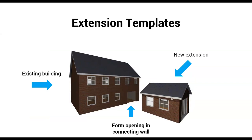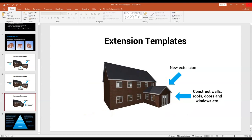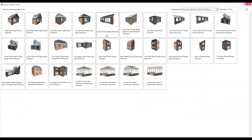So what an extension template allows you to estimate: the software will allow you to form the opening in the existing connecting wall, plaster the connecting wall taking into account that opening, and then estimate all the new elements in the extension — the walls, roofs, doors, windows, electrics, plumbing, and any fitting out. We're going to select the fifth template along, which is called the lean-to single storey extension. You'll see there are various different configurations, but we're just going to go with this simple lean-to single storey extension.